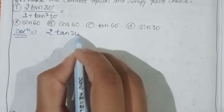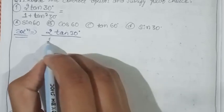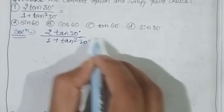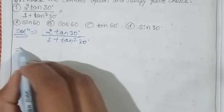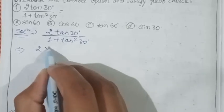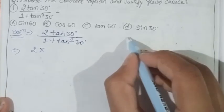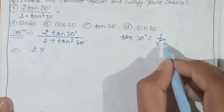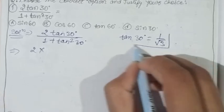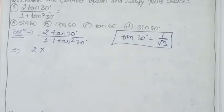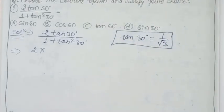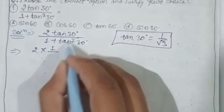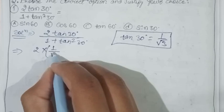We write 2 tan 30° upon 1 plus tan square 30°. What will we do? We will put the value: tan 30° is equal to 1 upon root 3. So we will use the value of tan 30° equals 1 upon root 3, and place 1 upon root 3.